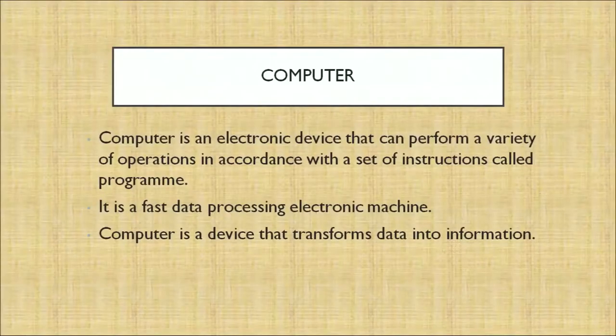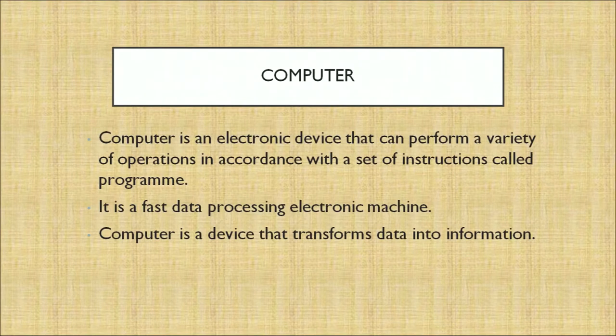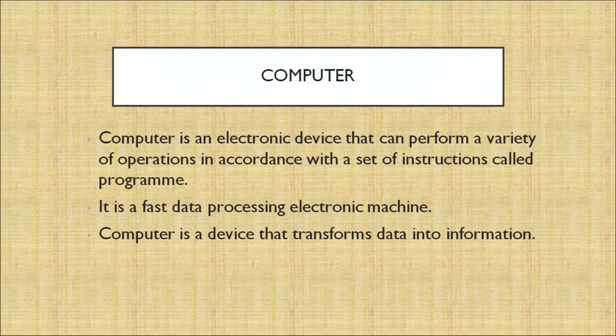What is a computer? All of us know about computers today — every one of us is using a computer or a laptop. A computer is an electronic device that can perform a variety of operations in accordance with a set of instructions called a program. It is a fast data processing electronic machine. A computer is a device that transforms data into information.